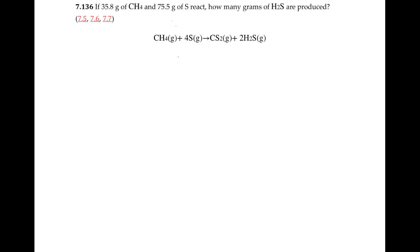Let's take a look at a question that deals with limiting reactants. Question 7.136 reads: if 35.8 grams of methane and 75.5 grams of sulfur react, how many grams of hydrogen sulfide are produced?